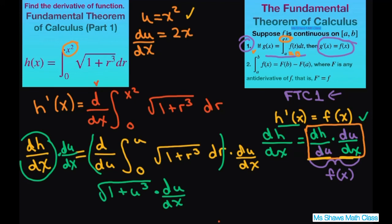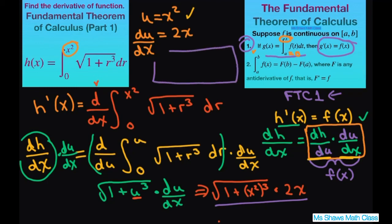Now go ahead and substitute your U's. So this is going to be square root of 1 plus X squared cubed times 2X. So finally, when you simplify this, I'm going to put it right in here so I don't have to slide over so you can see everything. I'm going to put the 2X first. So it's 2X times the square root of 1 plus X to the 6th. I just used my power property there. And that's your derivative, this F of X.